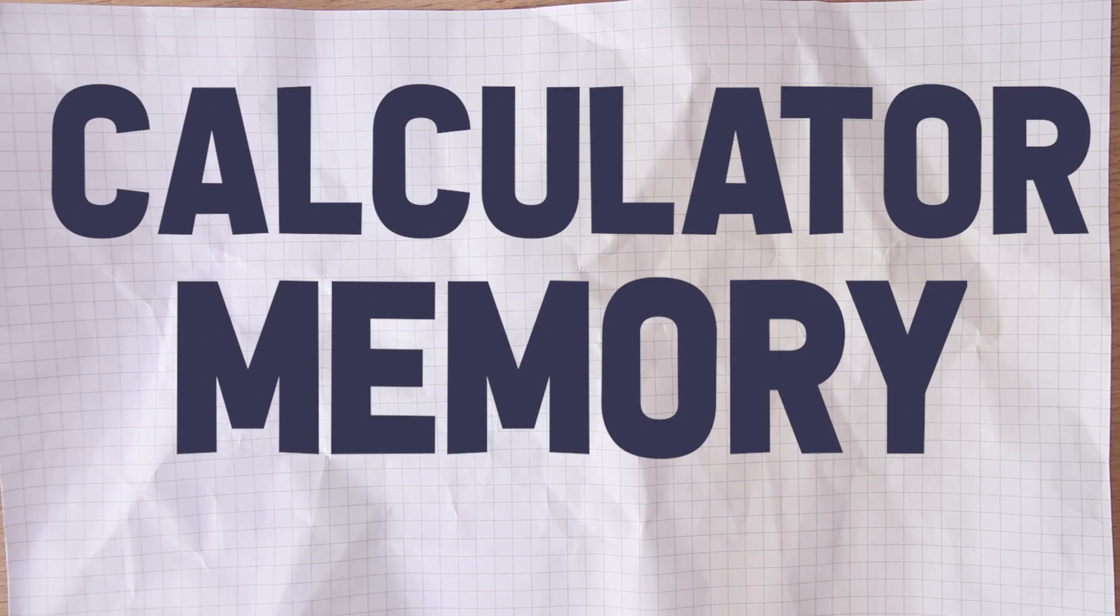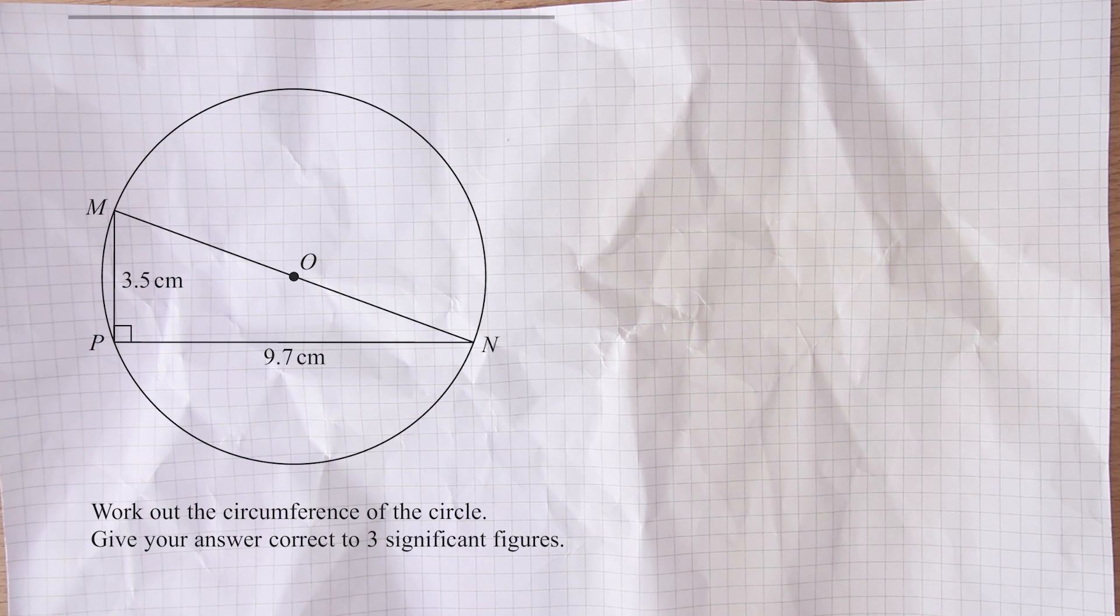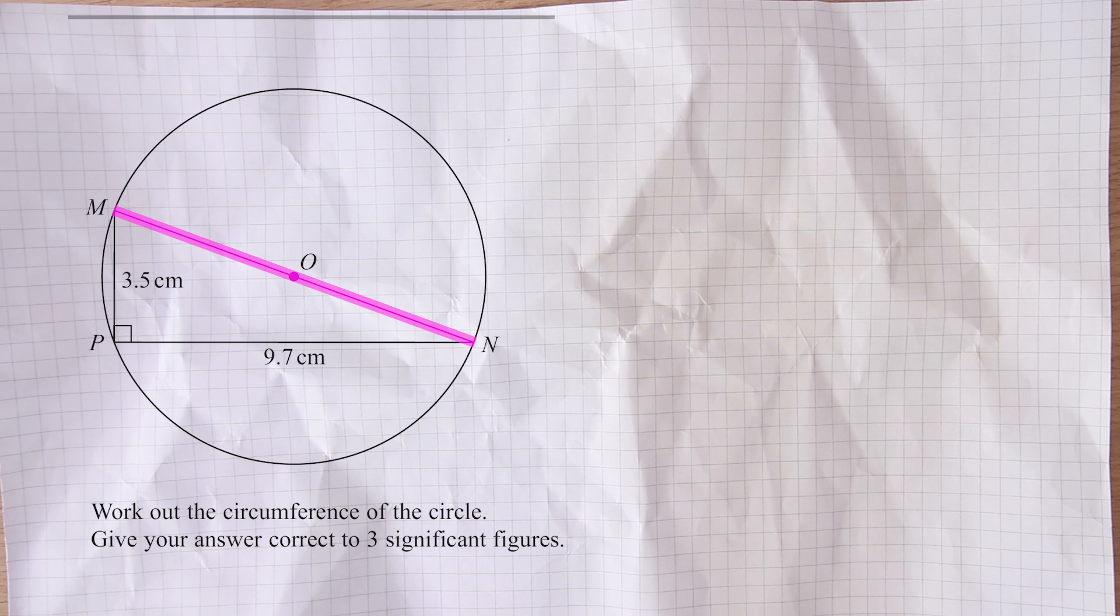The next tip is not a mistake that you might make with your calculator, but it's how to use your calculator to help you avoid making a mistake with your written workings. This is probably best illustrated with an example. Let's say you've got a question like this one where you are being asked to work out the circumference of the circle. I'll talk you through this question quickly. To find the circumference of a circle, we multiply the diameter by pi. In this question, we haven't been told the diameter, but we've got this triangle within the circle, and we can use that to calculate the diameter.